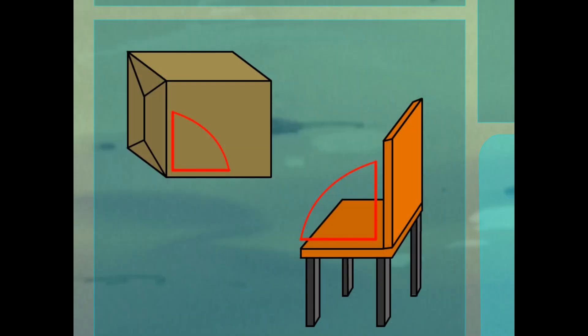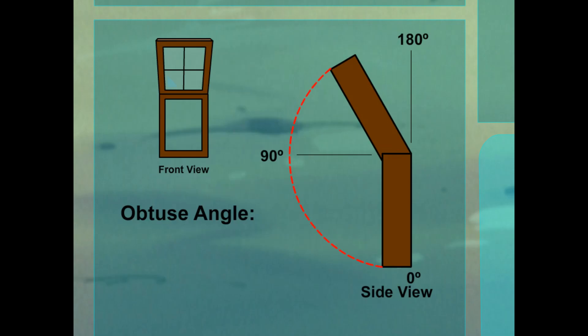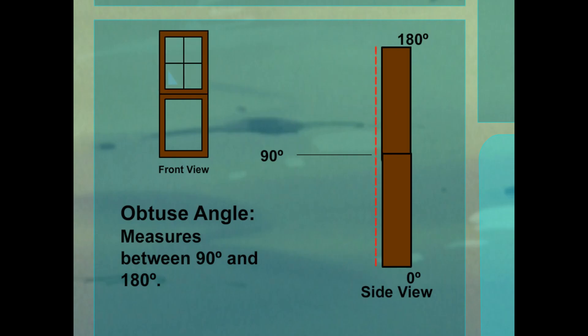Now, let's shed some more light on this subject. Let's look at this window. When it's open, it forms an obtuse angle, which measures between 90 and 180 degrees. If you open the window as far as it will go, it forms a straight angle. Straight angles are straight lines and measure 180 degrees.